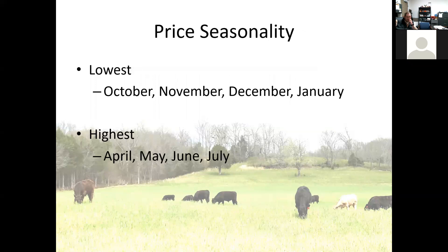Talking about price seasonality, our prices for slaughter cows are generally the lowest in October, November, December, and January. We've just come out of that time period, and we typically see the highest prices in April, May, June, and July.